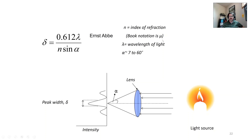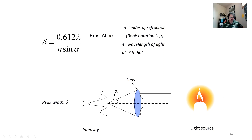The Ernst Abbe equation is: δ = 0.612λ / (n sin α), where n is the index of refraction (the Brandon and Kaplan textbook uses μ for some reason), λ is the wavelength of light, and α is a lens parameter - typically ranging between 7 and 60 degrees, though some Olympus tutorials show up to 70 degrees. You get a primary peak and secondary peaks; the peak width is delta.